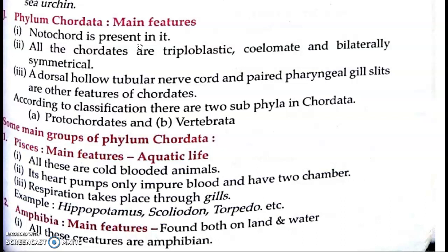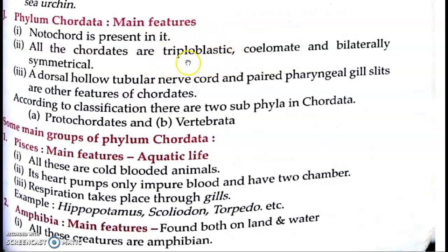Yeh Notochord body ko embryonic stage mein develop hote time spine ke paas present hoti hai. Aur yeh Chordata mein bhi paai jaati hai. Toh basically Chordata mein kya features aa gaye — Notochord is present. All Chordata are triploblastic, yaani ki unka embryonic development Ectoderm, Mesoderm, aur Endoderm — teeno layers se hota hai.